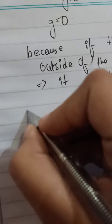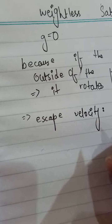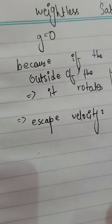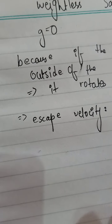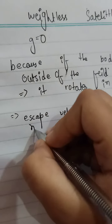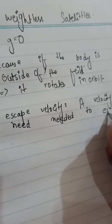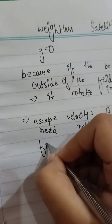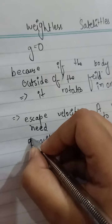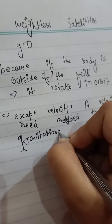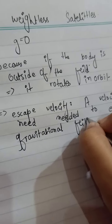We have to derive the formula of the weightless satellite — more detail will be tomorrow. Now talking about escape velocity: this is the velocity needed to escape from the gravitational field at any planet.